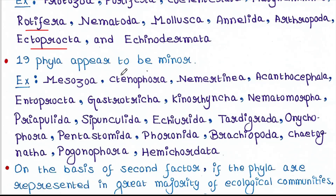And 19 phyla appear to be minor: Mesozoa, Ctenophora, Nemertina, Acanthocephala, Entoprocta, Gastrotricha, Kinorhyncha, Nematomorpha, Priapulida, Sipunculida, Echiurida, Tardigrada, Onychophora, Pentastomida, Phoronida, Brachiopoda, Chaetognatha, Pogonophora, and Hemichordata.